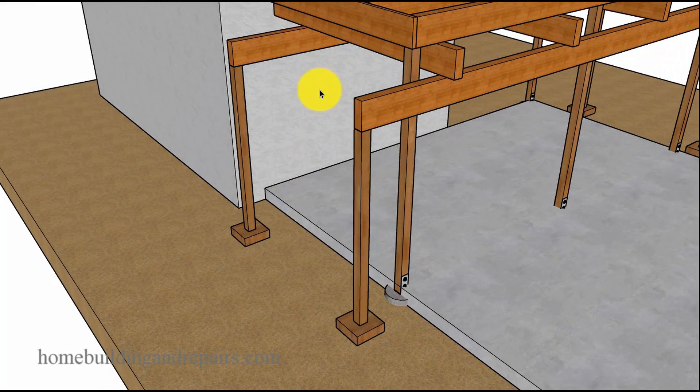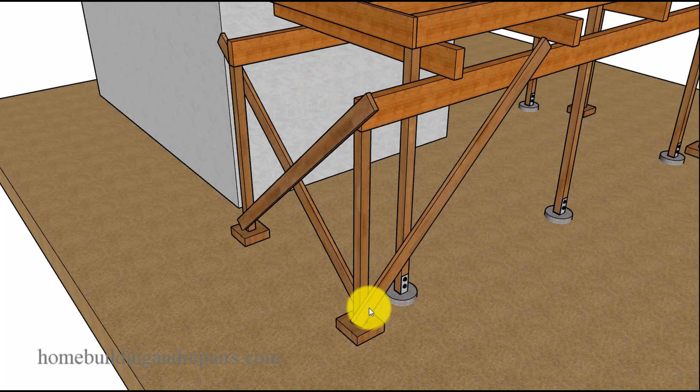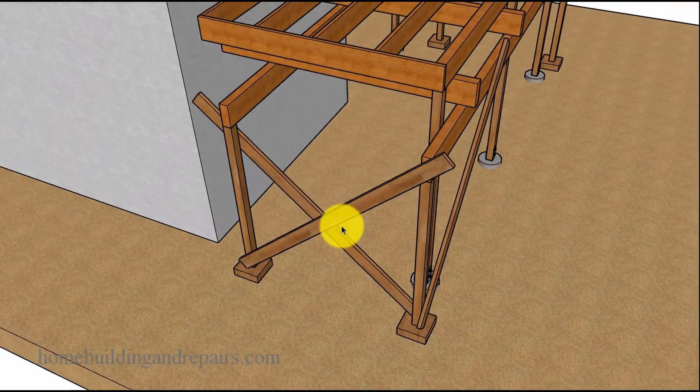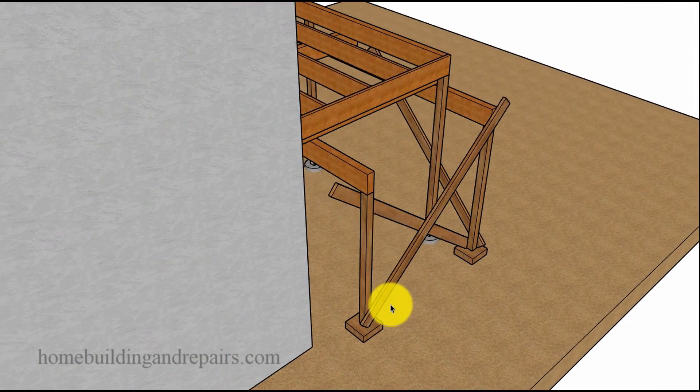Now one more thing I'd like to point out that's going to be very important will be to create some type of a bracing system so that you can prevent this from moving. This cannot move. It's important to transfer the loads down to the ground. It's also going to be important, I should say just as important, to make sure that this does not move. And that's going to require some type of bracing system.